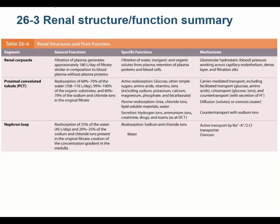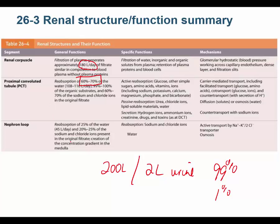The renal corpuscle filters about 200 liters a day — your book says 180, but 200 makes the math easy: two liters of urine is 1% of 200 liters, meaning 99% is reabsorbed. The proximal convoluted tubule reabsorbs 60–70% of the filtrate. The descending limb of the loop of Henle reabsorbs about 25% of the water. So by the bottom of the loop of Henle, about 95% of your water has been reabsorbed.